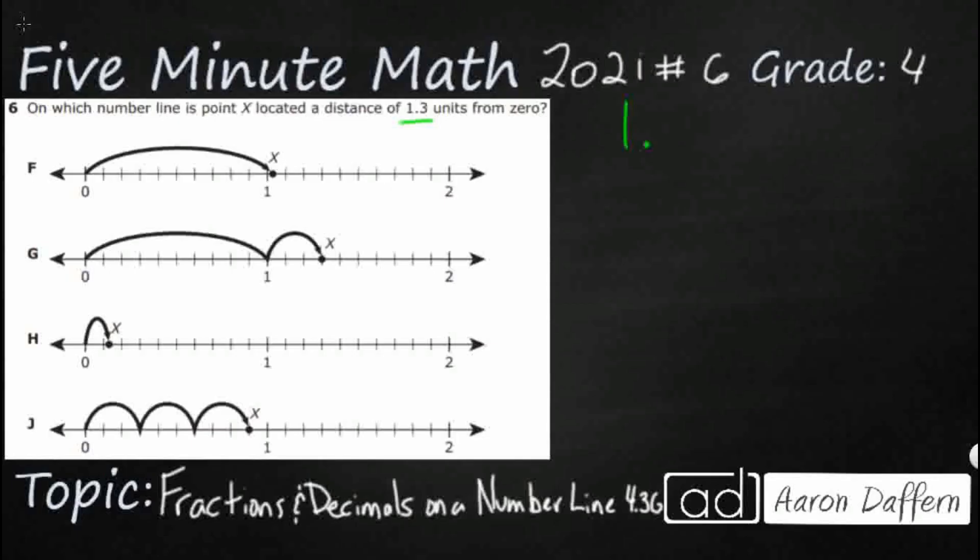So let's just build a little place value right there. This is our ones place and then we've got our tenths, that's the first location after the decimal point when we're looking at place value, so 1 and 3 tenths, which means it's going to be between 1 and 2.